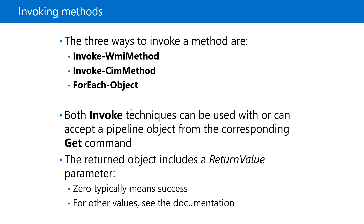Next, we'll look at invoking methods. Once we know the method we want to use and how to use it, we can invoke it easily. There are three ways to invoke a method: Invoke-WmiMethod, Invoke-CimMethod, and using ForEach-Object. Let us see the first one — using the Invoke-WmiMethod command.